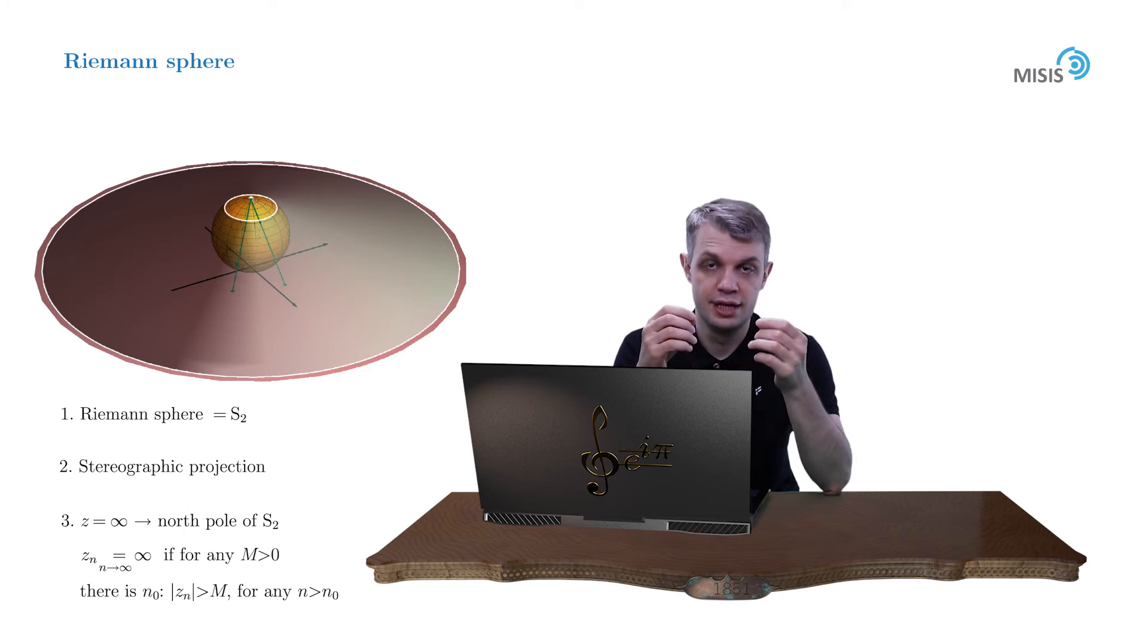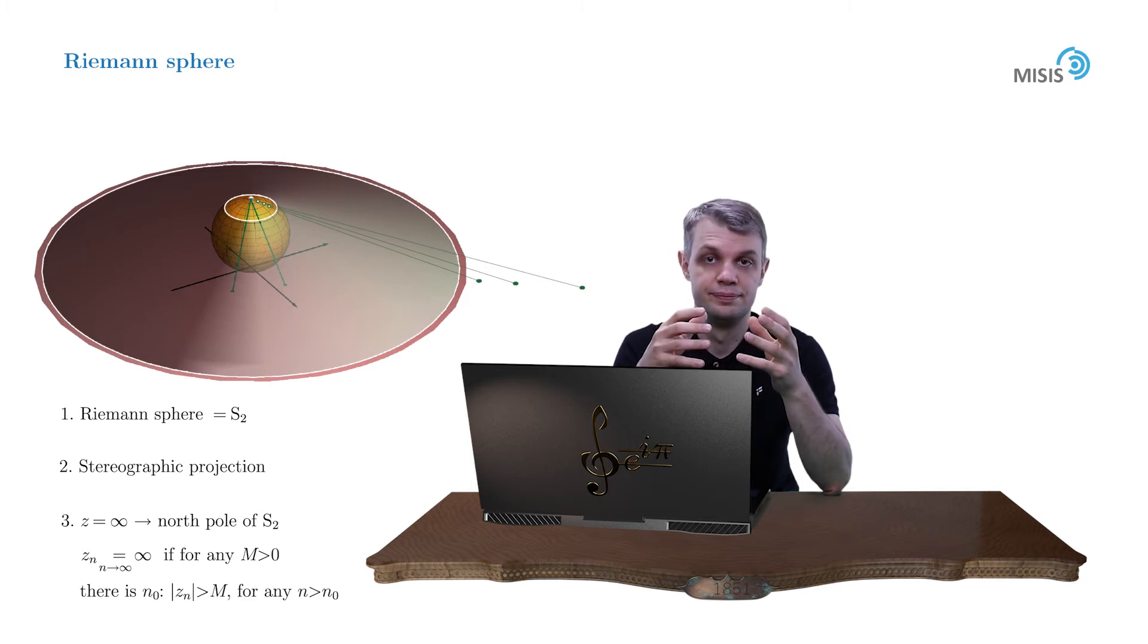This terminology is justified because the stereographic projection of this sequence onto a Riemann sphere does converge to the north pole. A complex plane with an addition of infinitely distant point is called an extended complex plane. It is equivalent to the sphere,